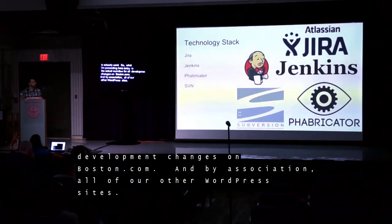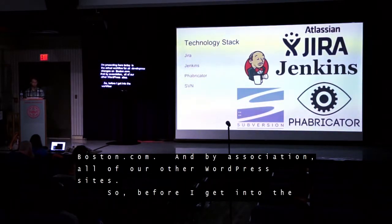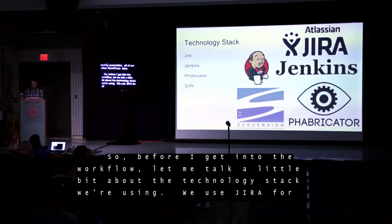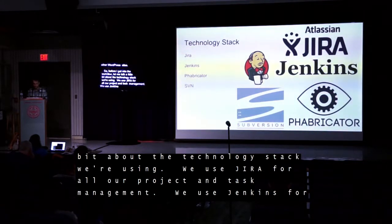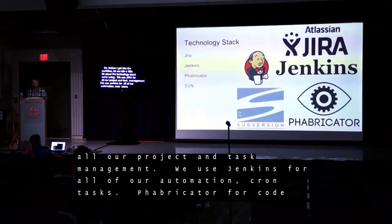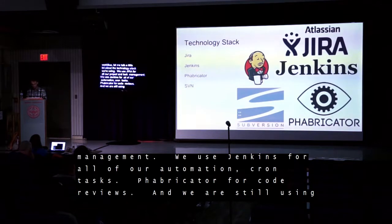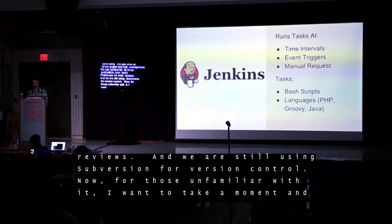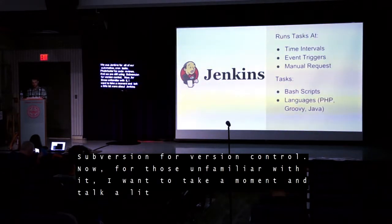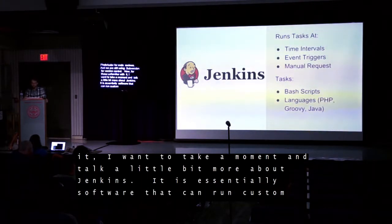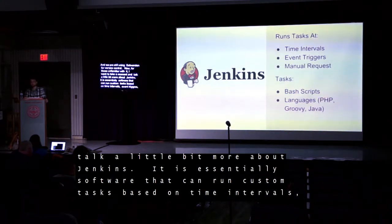Before I get into the workflow, let me talk a little about the technology stack we're using. We use Jira for all our project and task management. We use Jenkins for all of our automation and cron tasks. Fabricator for code reviews, and we are still using Subversion for version control. For those unfamiliar with it, I want to take a moment to talk a little more about Jenkins. It is essentially software that can run custom tasks based on time intervals, event triggers, or just manually kicking a job off.